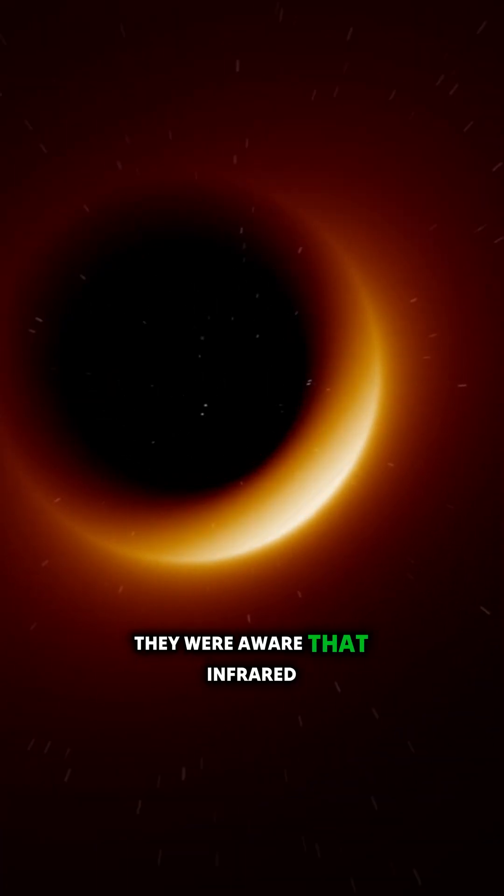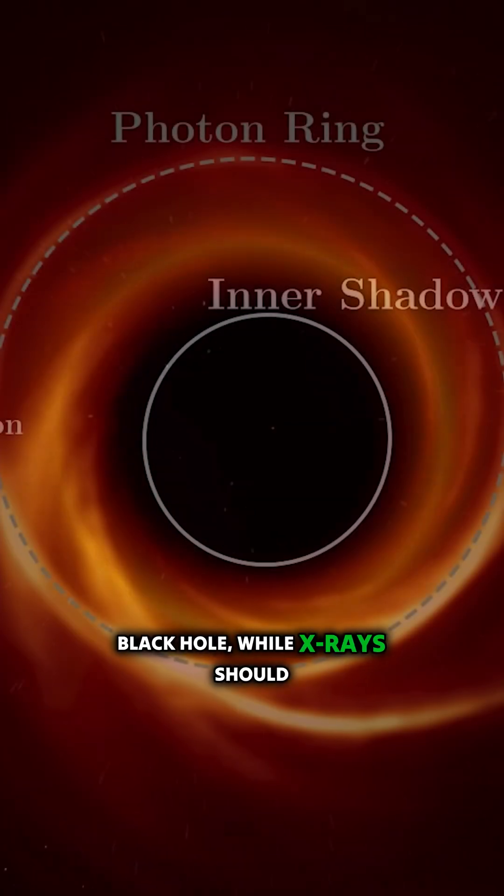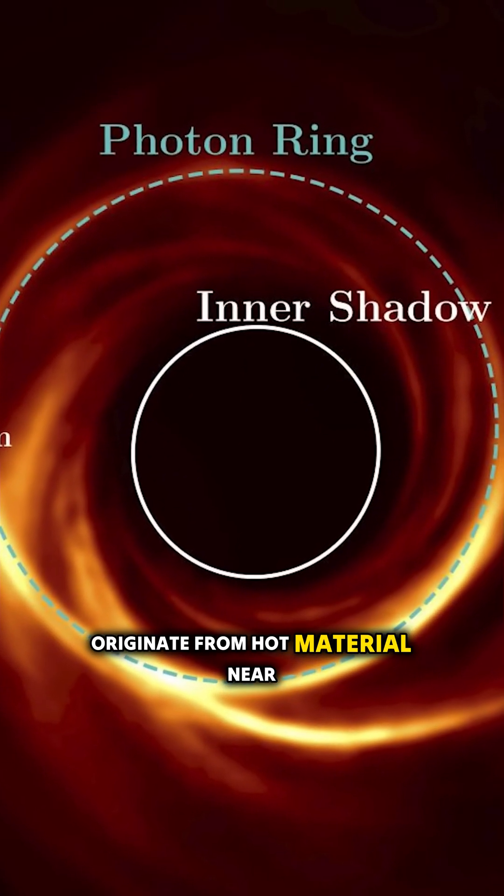They were aware that infrared light should originate from warm material farther away from the black hole, while X-rays should originate from hot material near the black hole.